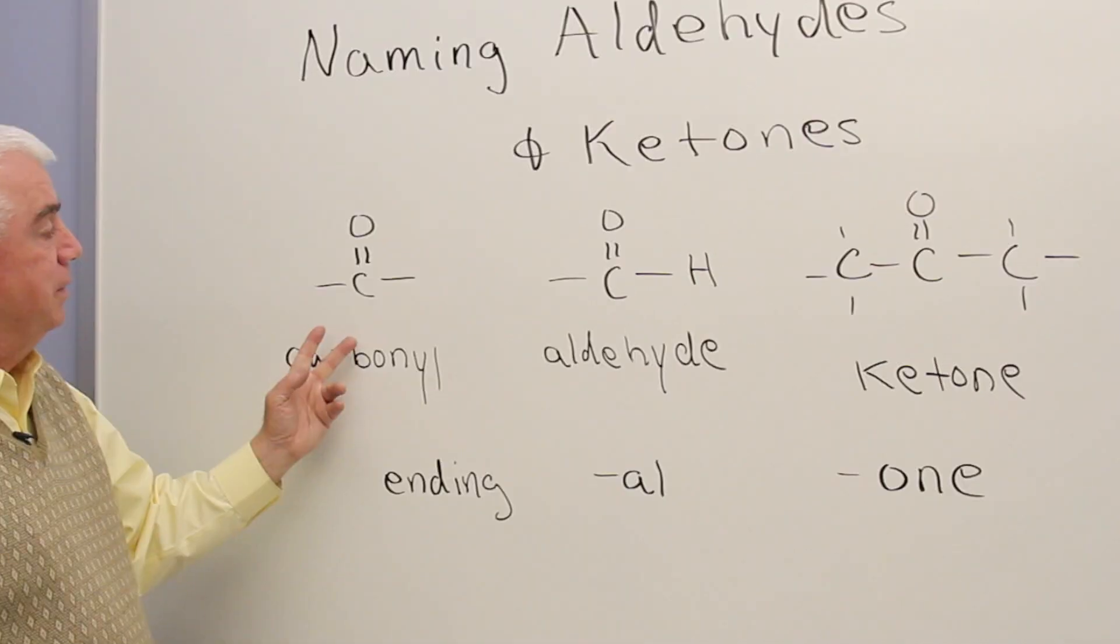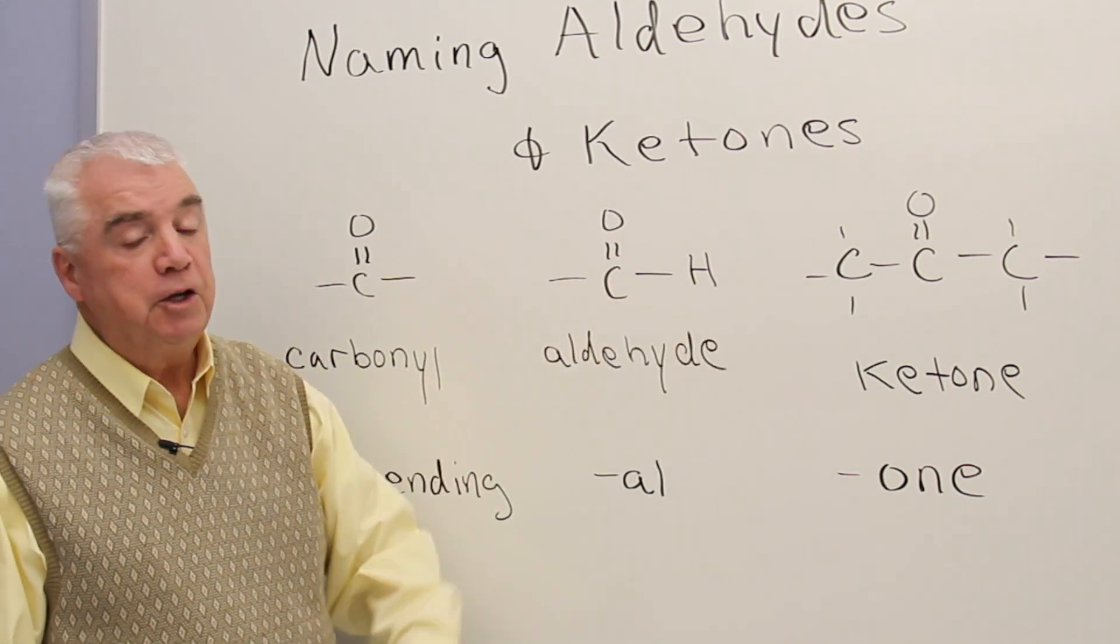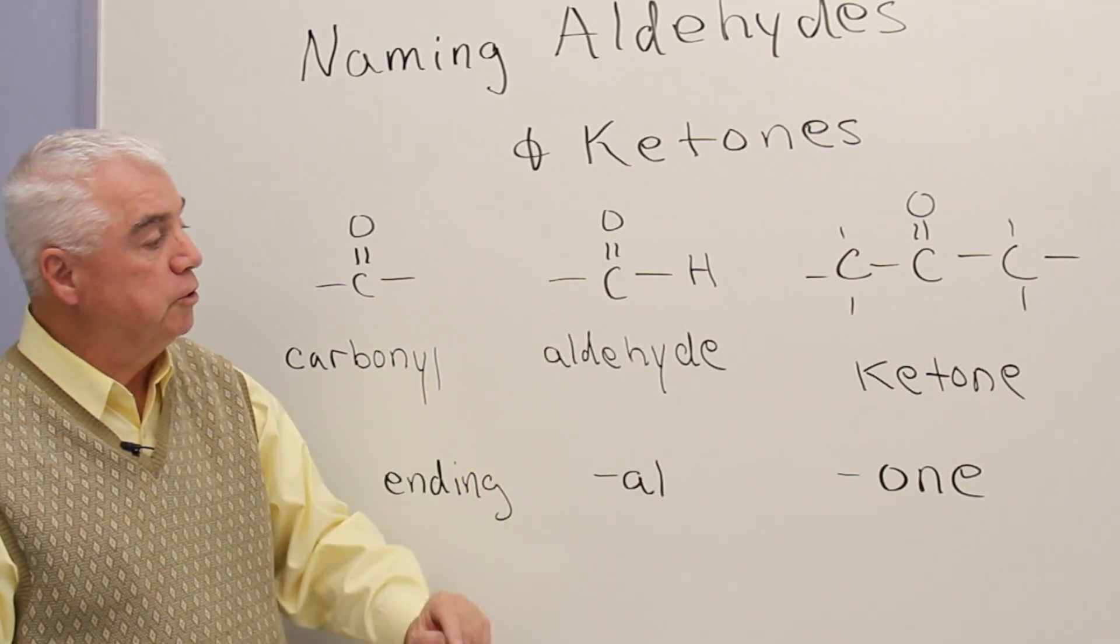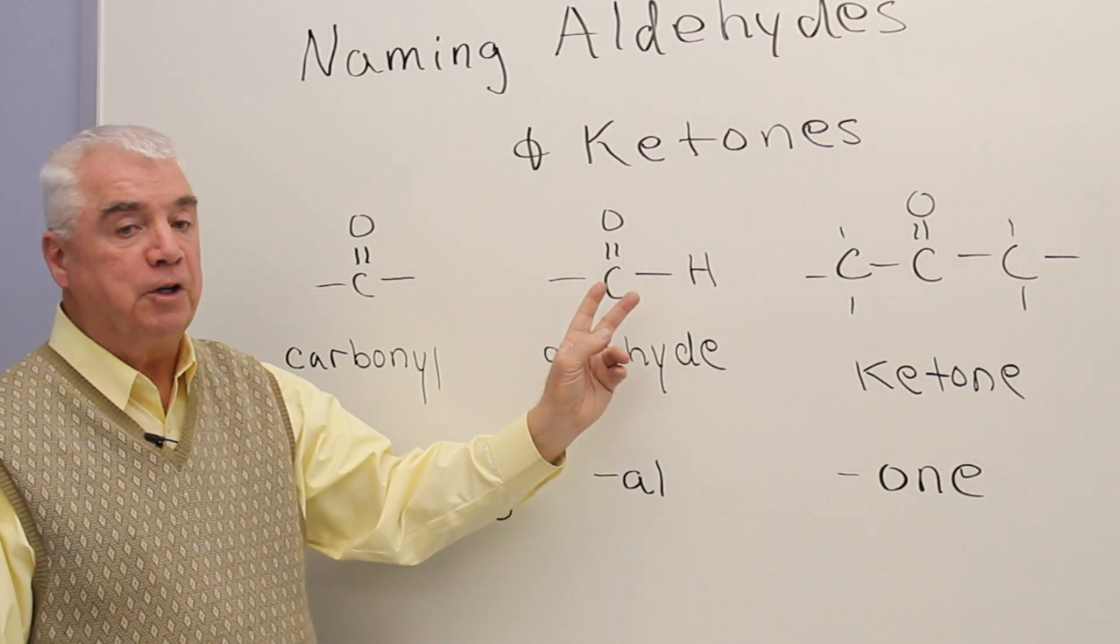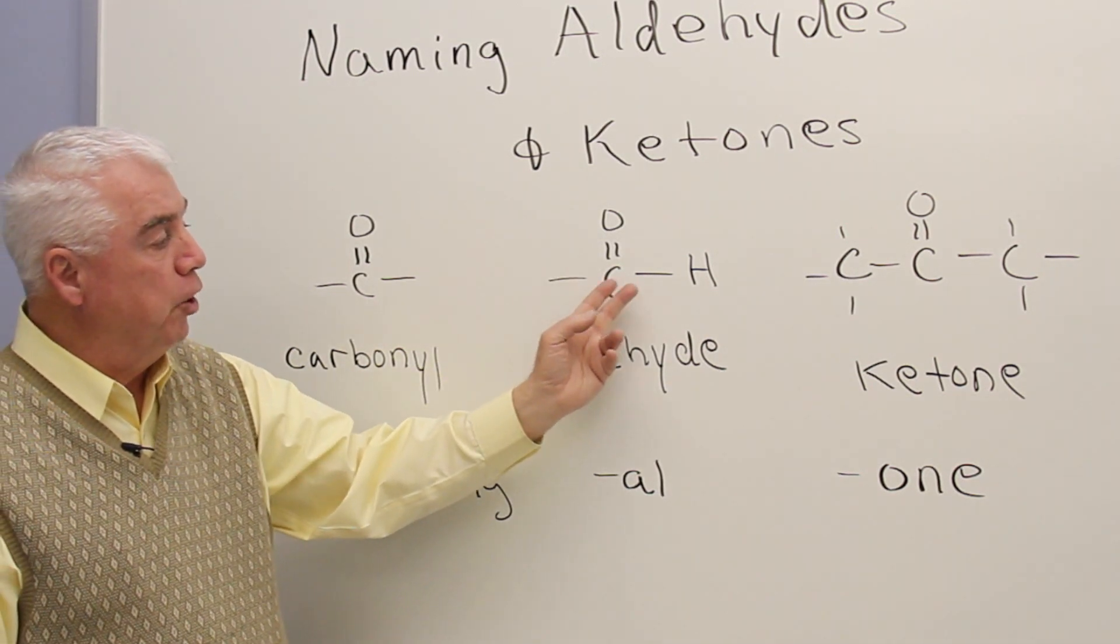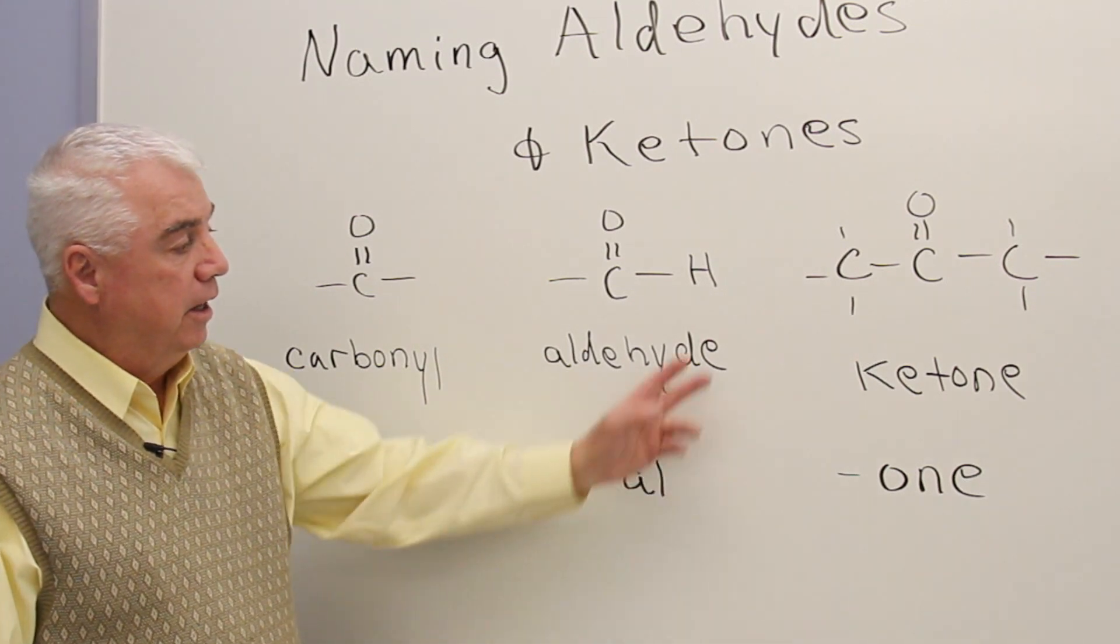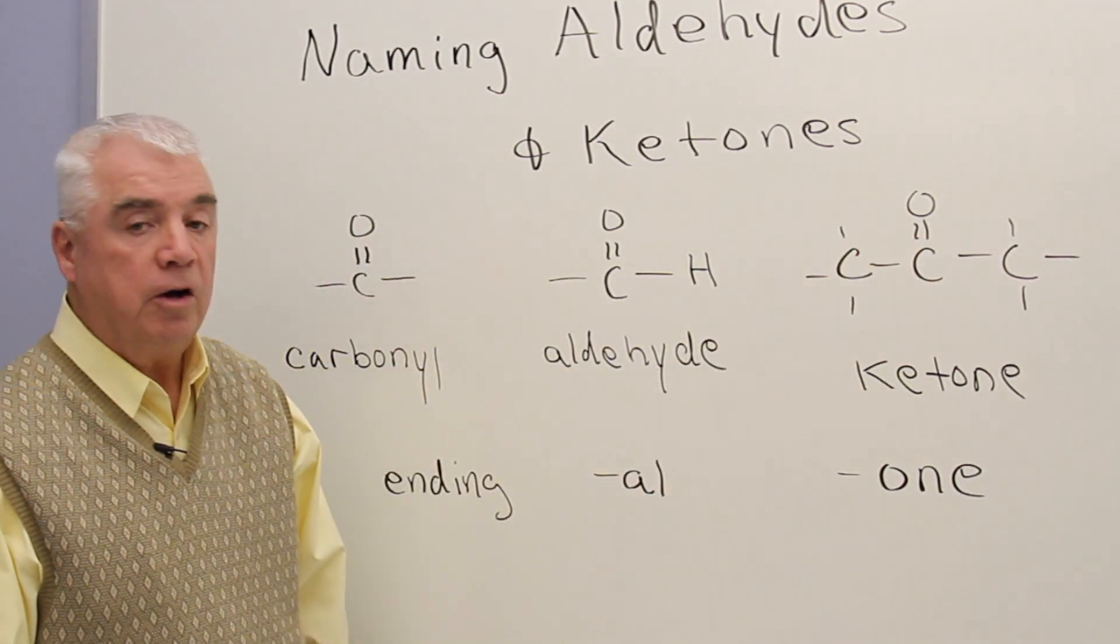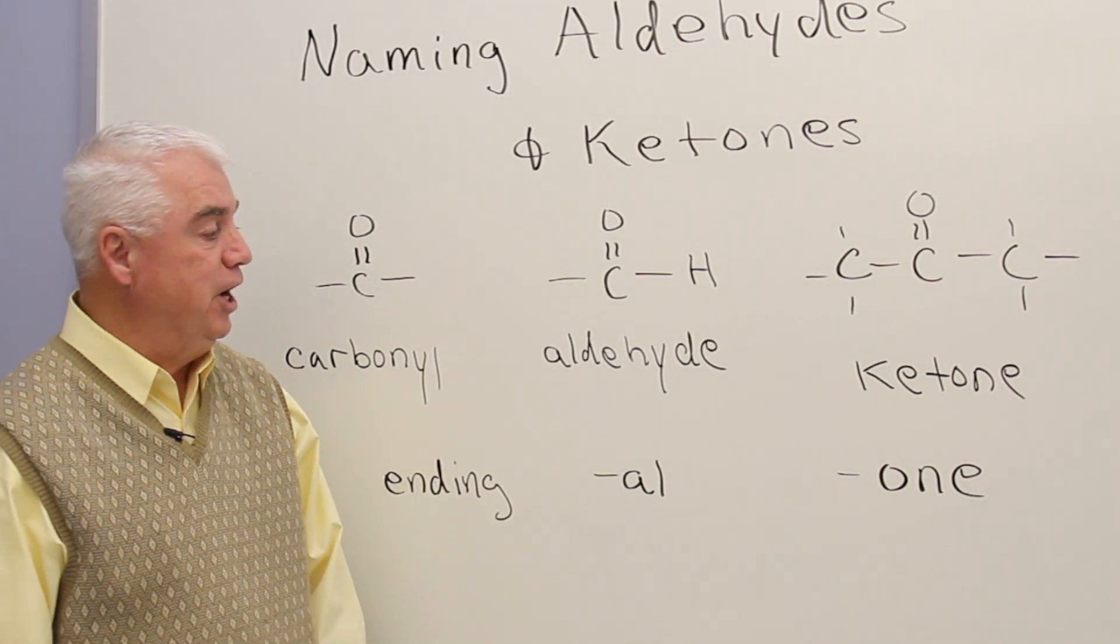They have the carbonyl group, a C double bond O, and aldehydes and ketones don't differ from each other very much in their structures, but we'll see a little later on that the reactions are quite different. An aldehyde has the C double bond O and a hydrogen attached to that carbon. A ketone, C double bond O, but on each side are carbon atoms. In other words, it's in the middle of a chain.